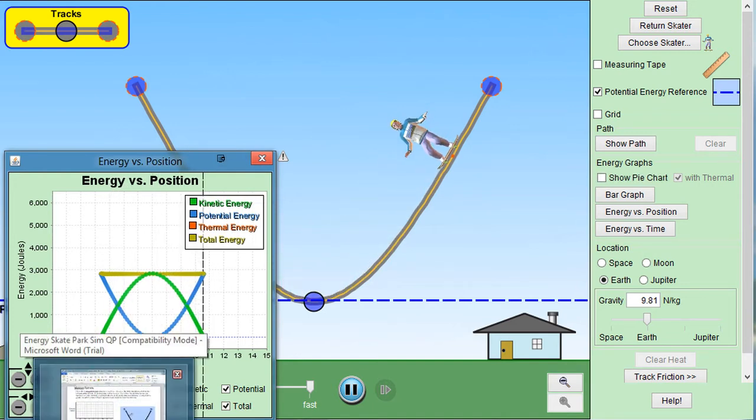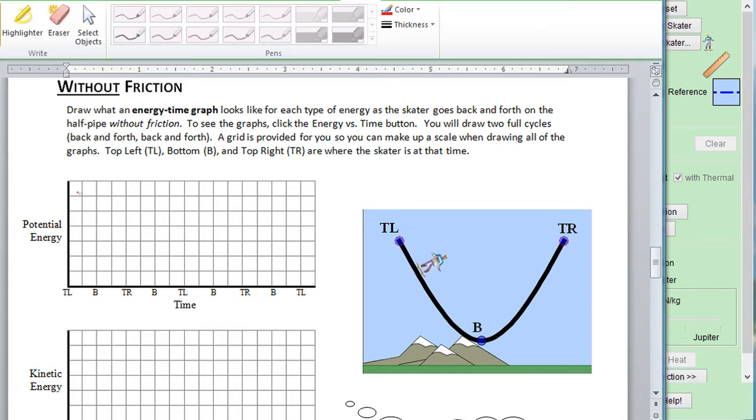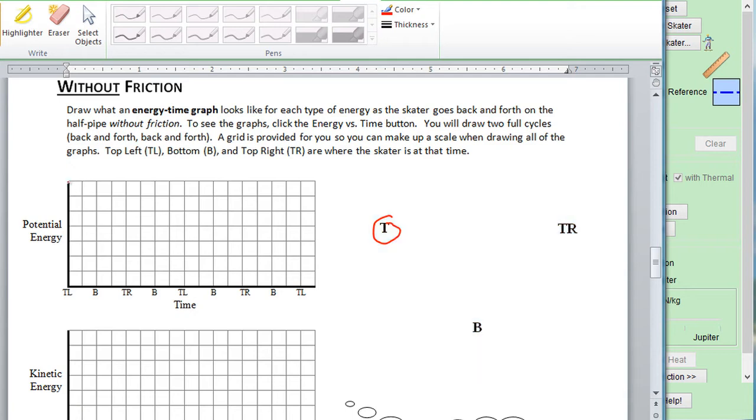If you take a look at page three of your lab handout, it looks like this. I want to show you how this works. So our skater, Ken, has the greatest potential energy when he's at the top left position here.